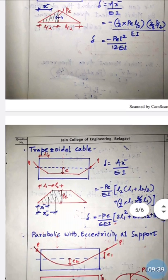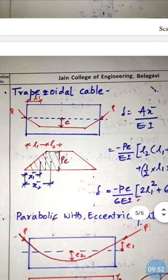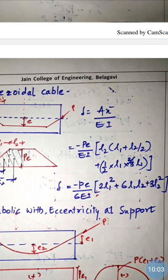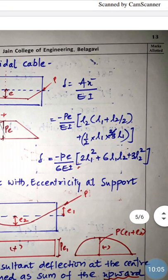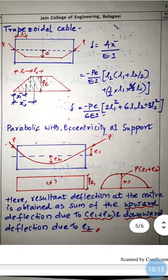For a trapezoidal tendon profile, the bending moment diagram is trapezoidal. We divide it into two parts — one triangular and one rectangular — giving areas A1 and A2. Computing A1X̄1 + A2X̄2 divided by EI gives the final formula: δ = −(Pe / 6EI)(2L1² + 6L1L2 + 3L2²). These formulas cover different tendon profile shapes.